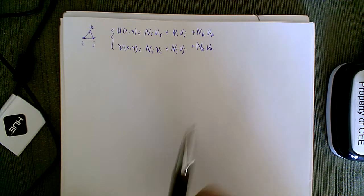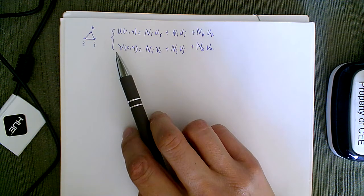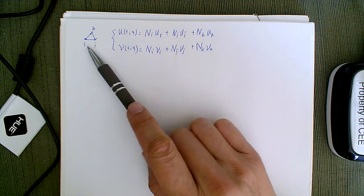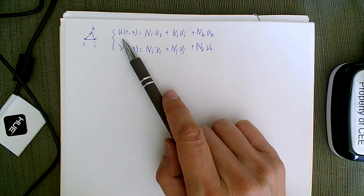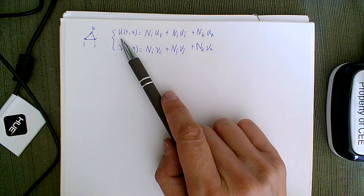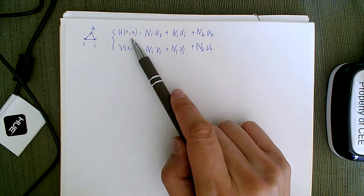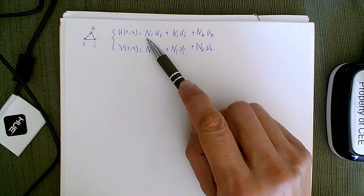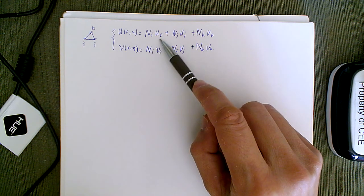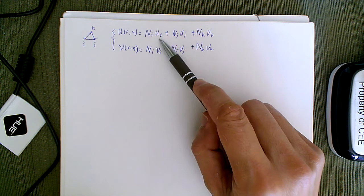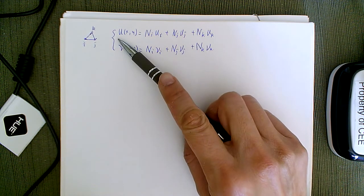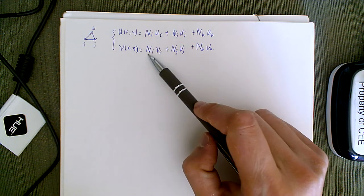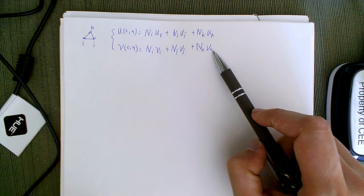We pick up exactly where we left off. We have derived — or I've walked you through the process of deriving — the shape function for a 2D triangular element. The displacement function is a two-variable function, but those two variables are buried in Ni, Nj, and Nk, which are just linear functions of x and y. Multiplying them by the nodal displacement in the x-direction gives you the x-direction displacement of any point in your element, and the same applies for y.